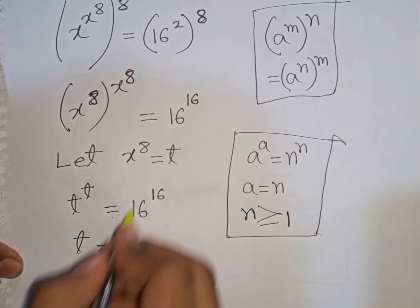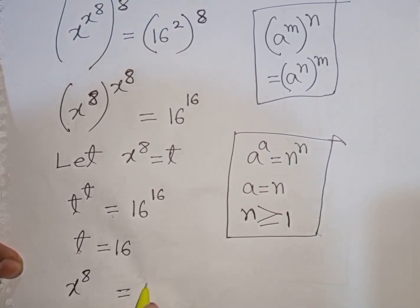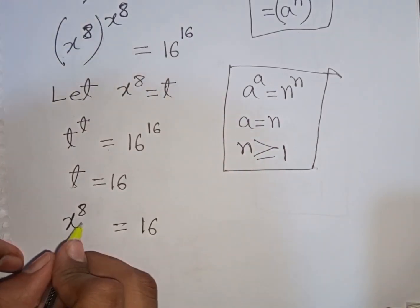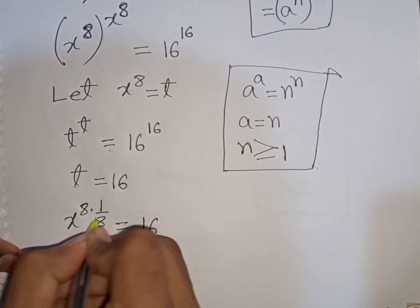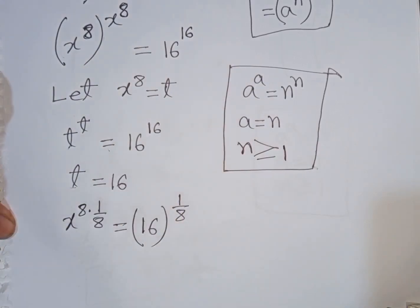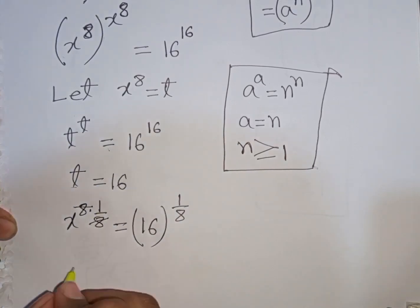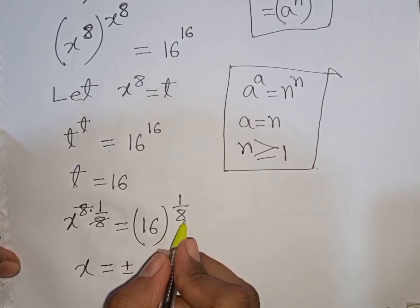Remember that t means x power 8. So x power 8 is equal to 16. Now we need the value of x, so we multiply both sides by the power of 1 by 8. The 8 will be cancelled, so x power 1, which is x, is equal to plus or minus 16 power of 1 by 8.